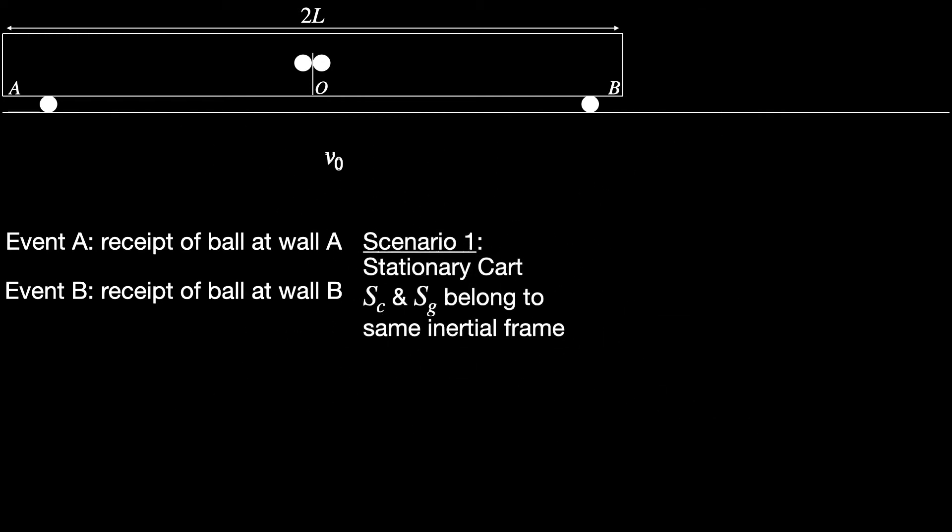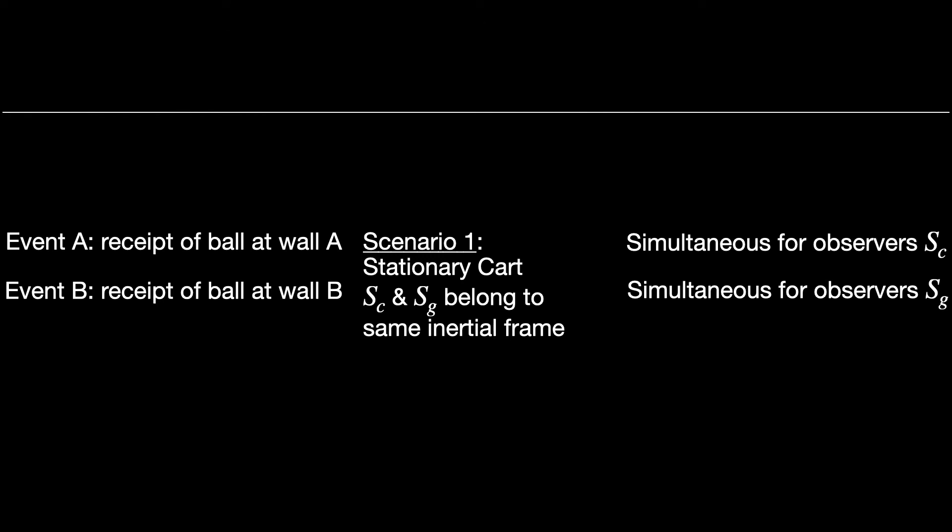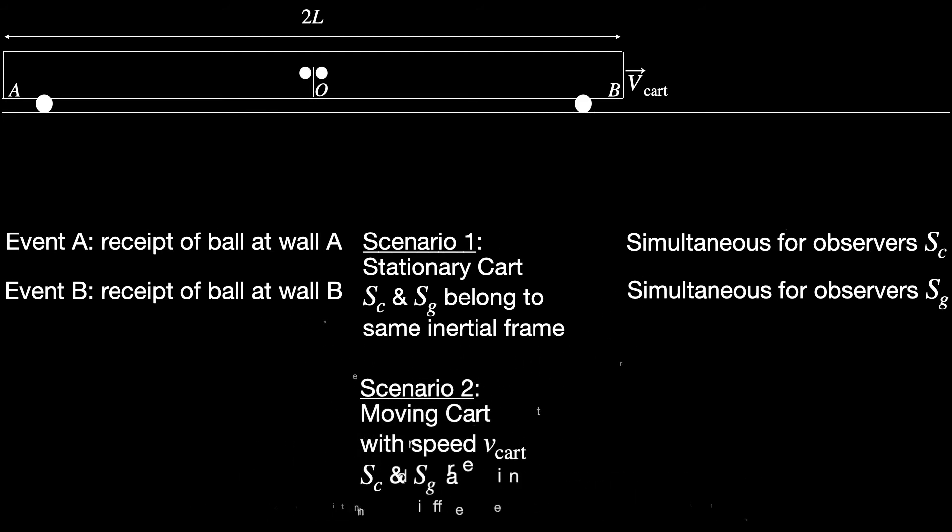First one is when the cart is stationary with respect to the ground so that both sets of observers SG and SC have no relative motion with respect to each other and thus they are actually in the same inertial frame. Since the two balls are thrown simultaneously with same speed v0 but at opposite directions and both have to move equal distance L to reach the walls A and B, the receipt of the two balls, that is event A and B, appear to be simultaneous to both sets of observers. Alright, that was simple enough. So now consider the second scenario: the cart is moving at a speed v_cart, let us say towards the right side with respect to the ground. So this time the group of observers SC on board the cart are of course moving with respect to the ground observers SG and thus they are in a different inertial frame. Question is, will the observation of the events A and B made by the two groups differ this time? Let us analyze.